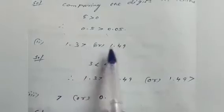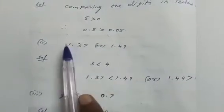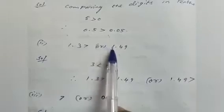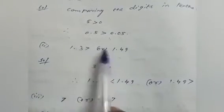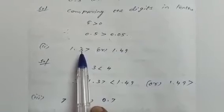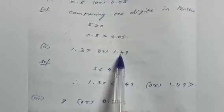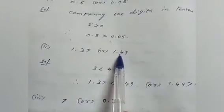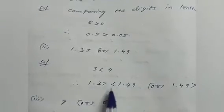The next example: which one is greater, 1.37 or 1.49? The whole number part is 1 in both cases, so both are the same. Next we compare the tenths place: here it is 3, and here it is 4. Since 4 is greater, 3 is less than 4, so 1.37 is less than 1.49.